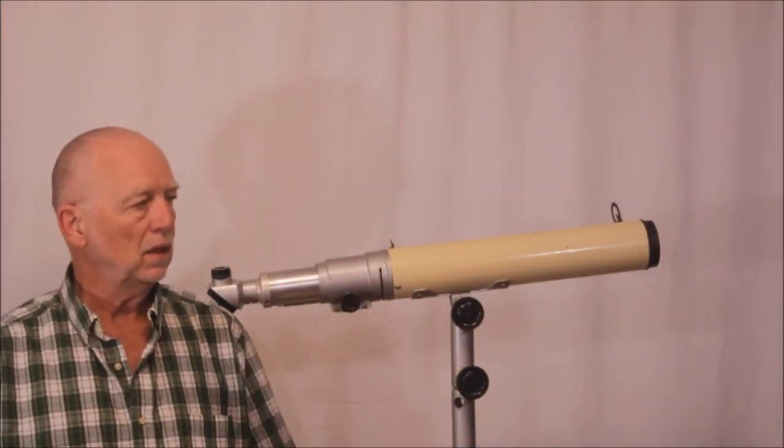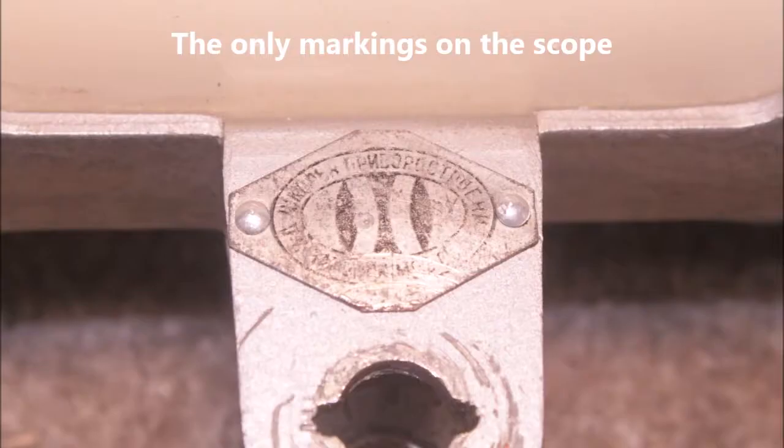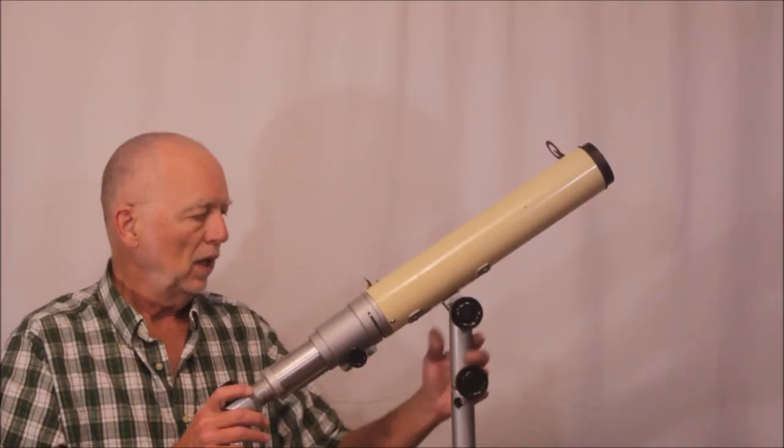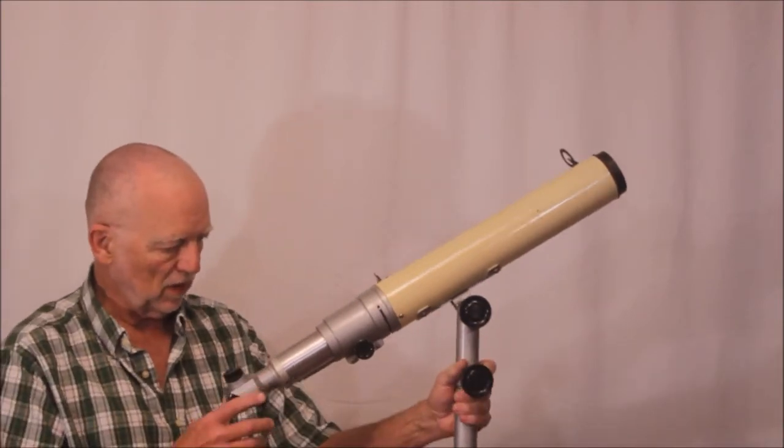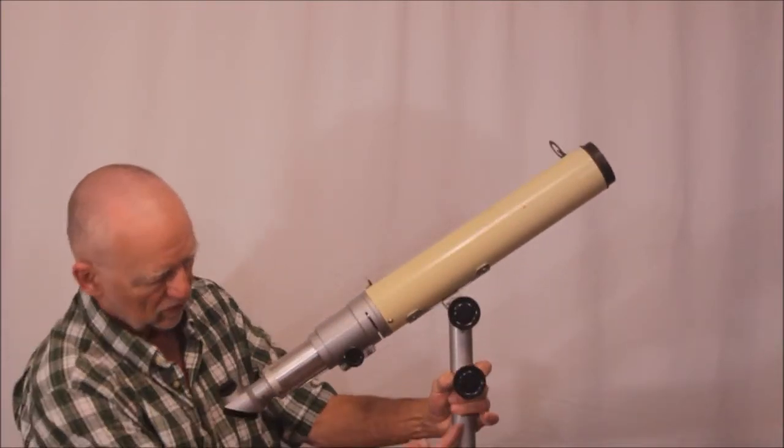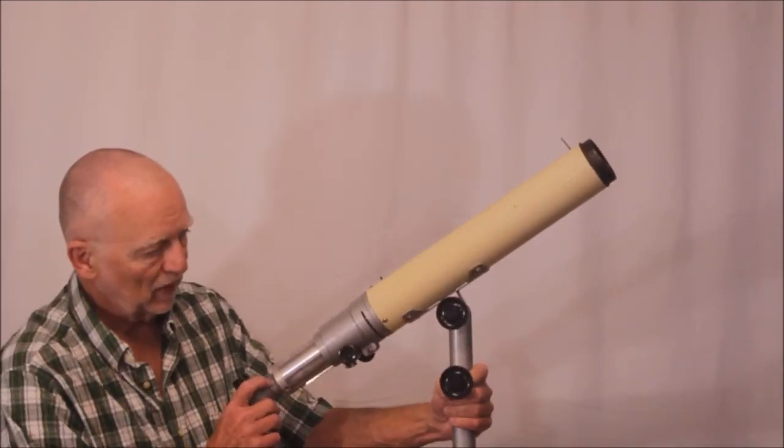This is a very strange and odd and unknown 60mm Russian refractor. Ignore the wobbliness of the mount. I've got it on a temporary thing here to hold it up. It would have come with a nice steel pier of some sort.